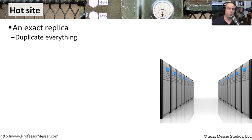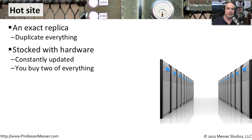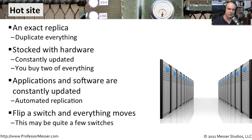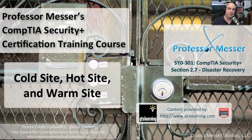A hot site is the far extreme, where you have an exact duplication of everything. All of those systems are up and running — you've got a complete duplicate of a data center at a remote site. So whenever you're buying hardware, you naturally buy duplicates of that hardware, put it on your hot site, and get it up and running. You're usually updating all of your software, all of your configurations, everything in that site, so that you can flip a switch and have everything move from one site to the other. If you've got a hot site available, it becomes relatively simple to move all of your technical resources, all of your IT infrastructure, from one data center to another in a very short period of time.